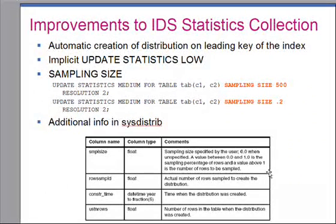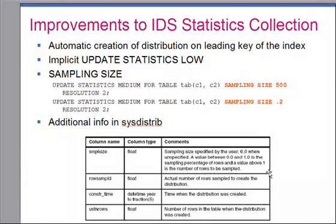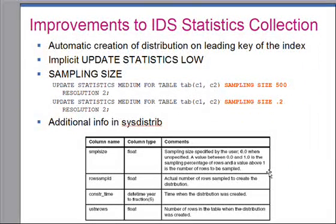You will also see additional columns in SYSDISTRIB and SYSTABLES. In SYSDISTRIB, the new additional columns are: sample_size, which contains the sampling size parameter you specified — if you did not specify it, we save 0.0 — and number_of_rows_sampled, which represents the actual number of rows IDS sampled to create the distribution.